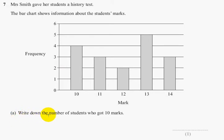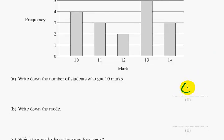Part A. Write down the number of students who got 10 marks. So this is the 10 marks here. How many students? 1, 2, 3, 4. And that's worth 1 mark.